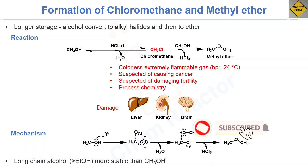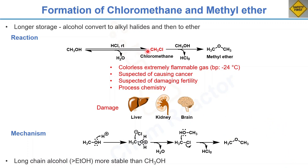It is very important to use this HCl in methanol solution carefully in the laboratory. Here is the complete mechanism of chloromethane and dimethyl ether formation. The lone pair of electrons from the oxygen of methanol abstracts the proton from HCl, forming an oxonium ion. The chloride ion then attacks the carbon of the methanol, giving chloromethane and liberating water. Subsequently, another molecule of methanol attacks the carbon of chloromethane, forming dimethyl ether and HCl gas.